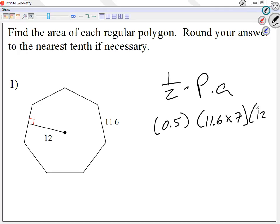The 7 because there are seven sides. So the perimeter is 11.6 times 7. And my apothem, in this case, is 12. Right? It's given. It's 12.